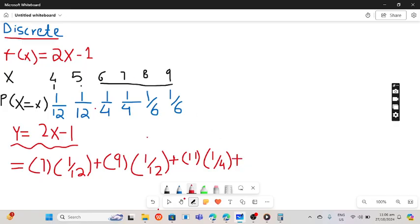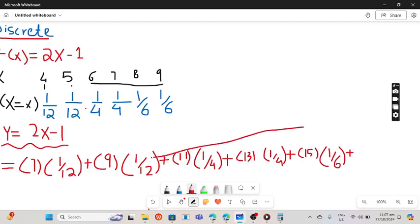Plus 2 times 7 is 14 minus 1, you get 13 multiplied with 1 by 4. Plus 2 times 8 is 16 minus 1, you get 15, multiplied with 1 by 6. Plus 2 times 9 is 18, 18 minus 1 you get 17, multiplied with 1 by 6.